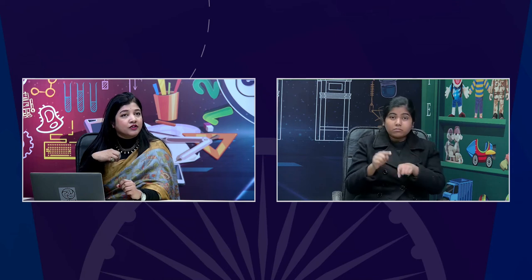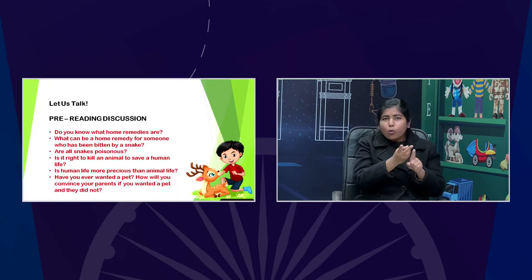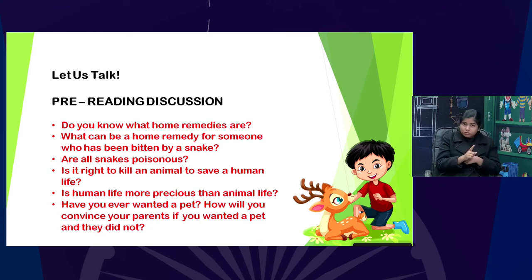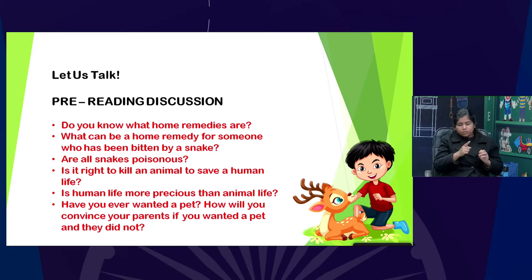Visually impaired children are as intelligent as children who have sight. I would always begin a lesson by asking for pre-existing knowledge — questions such as: What do you know about home remedies? What can be a home remedy for a person bitten by a snake? Are all snakes poisonous? And then a very debatable question: Is it right to kill an animal for a human life? And if yes, is a human life more precious than an animal life? All of those questions can be discussed alongside the scaffolding we provide through sounds.